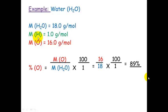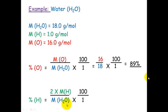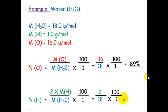To work out the percentage of hydrogen — remember there are 2 hydrogens — we need the molar mass of the 2 hydrogens divided by the molar mass of the entire compound, which is 2 divided by 18, times 100, which equals 11%.